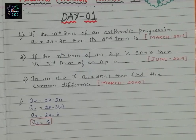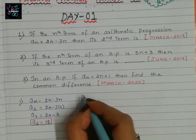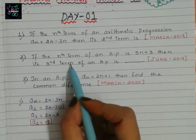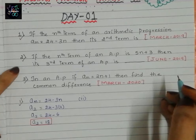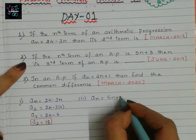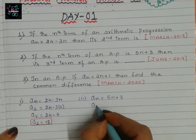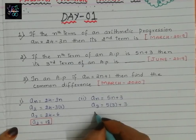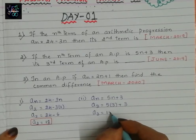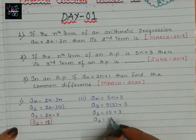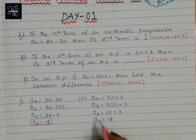Now let us see the second question. If the nth term of an AP is 5n plus 3, then its third term is what? This is the question from June 2019. The nth term is an equals 5n plus 3. To find the third term, a3 equals 5 times 3 plus 3, which is 15 plus 3. So a3 equals 18. The third term of this AP is 18.